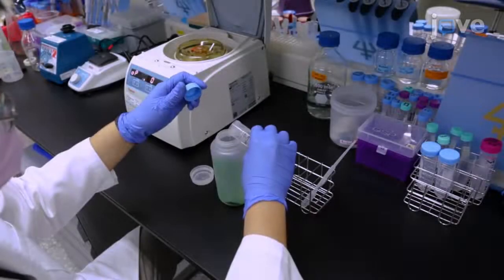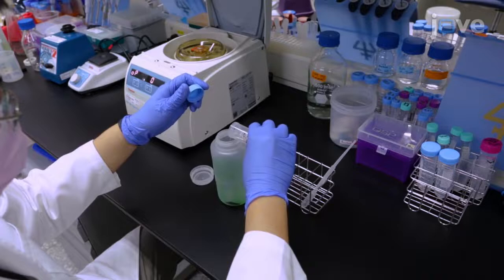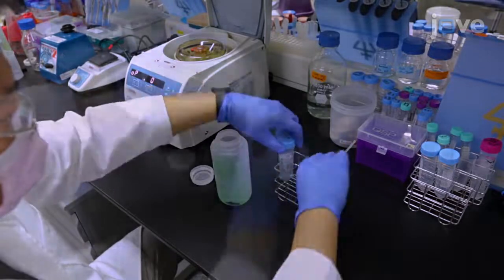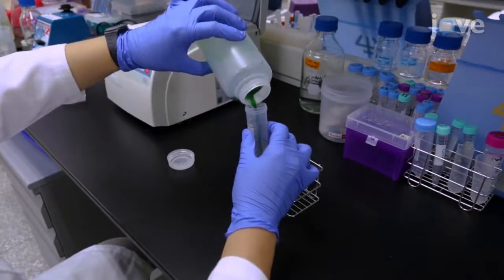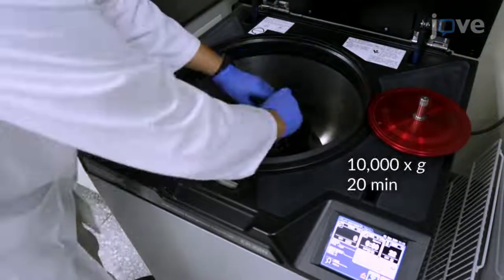Suspend the cell pellets and wash twice with 0.75 molar potassium phosphate buffer, pH 7. Pellet the cells in a 50 mL centrifuge tube by centrifugation at room temperature.